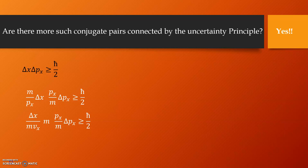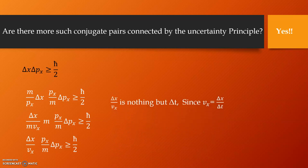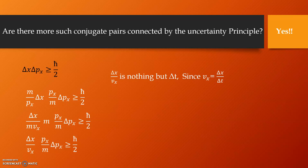So, in the left-hand side we have a quantity delta x by vx, which is nothing but the short interval of time delta t. Why so? Because this velocity vx is nothing but dx dt or delta x by delta t.